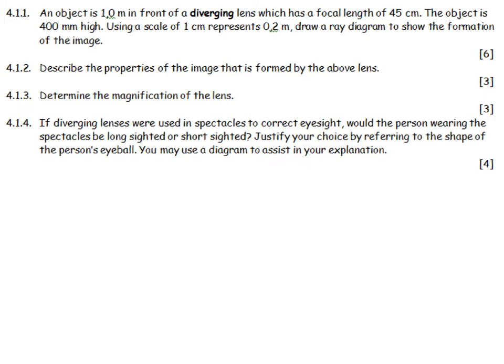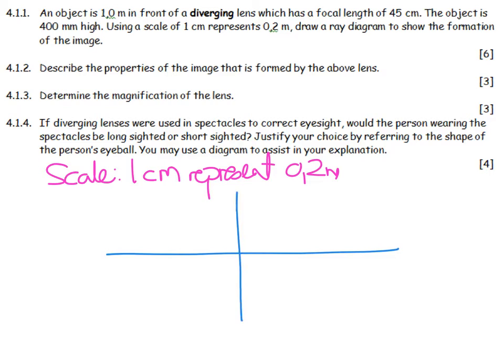The first thing that you have to do is you actually have to write out the scale. Even though I gave you that scale, you do need to say a scale 1 centimeter represents 0.2 meters. The next thing you need to do is you need to put your diverging lens in position, and you need to decide, using that scale, what everything is.